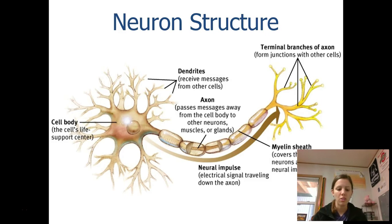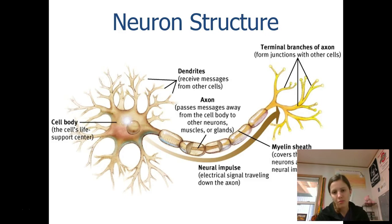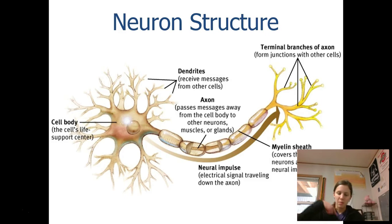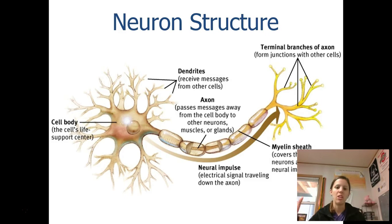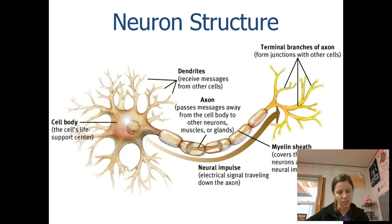The way neurons communicate is: if I stub my toe, for example, there's a neuron down there that realizes I stubbed my toe and communicates to neurons all the way up my leg, all the way to my brain, until I've realized 'ouch, I've stubbed my toe.' It's communication to communication to communication. So the dendrites are specifically the part that receive that information from the previous neuron.